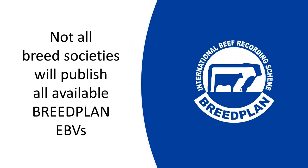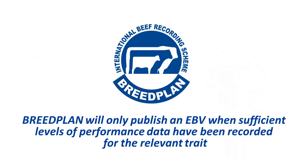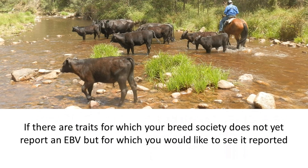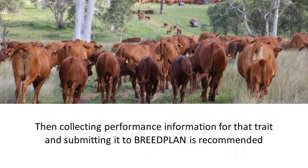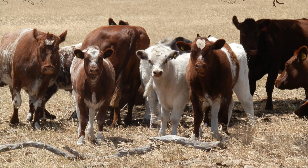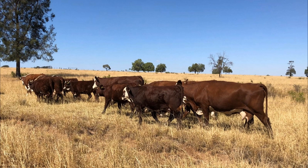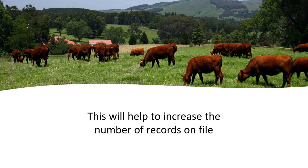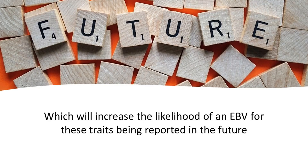Not all breed societies will publish all available Breedplan EBVs. Breedplan will only publish an EBV when sufficient levels of performance data have been recorded for the relevant trait. If there are traits for which your breed society does not yet report an EBV, but for which you would like to see it reported, then collecting performance information for that trait and submitting it to Breedplan is recommended. This will help to increase the number of records on file, which will increase the likelihood of an EBV for these traits being reported in the future.